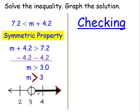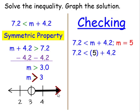For checking, we can pick any number to the right of 3. I'm choosing to use 5. We're going to substitute 5 in for m. 5 plus 4.2 is a total of 9.2. 7.2 is in fact less than 9.2, so therefore our solution is reasonable. And let's take a look at the last example.